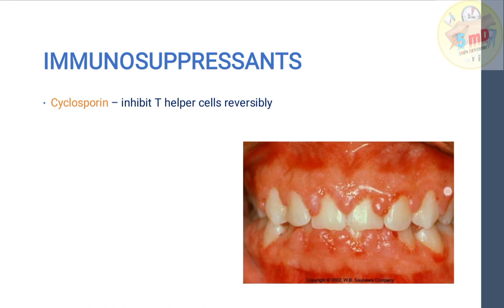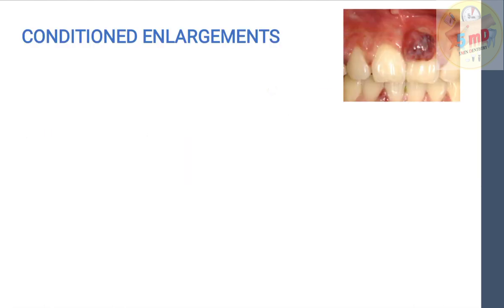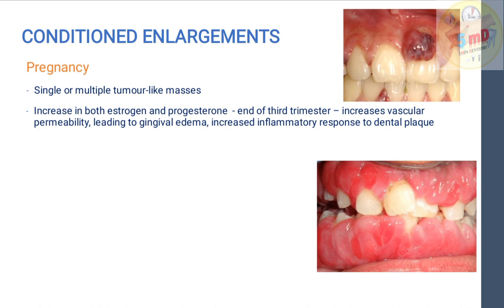The third type is enlargement associated with systemic conditions — conditioned enlargements. Pregnancy gingivitis can present as single or multiple tumor-like masses. The causes include increased estrogen and progesterone by the end of the third trimester, which increases vascular permeability, leading to gingival edema and increased inflammatory response to dental plaque. Plaque should be removed before the third trimester if the patient is susceptible to gingivitis.